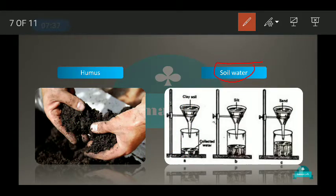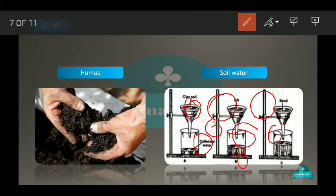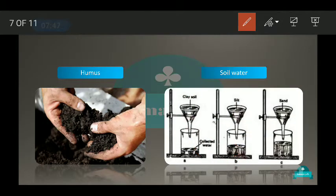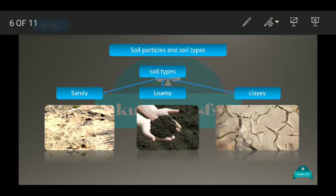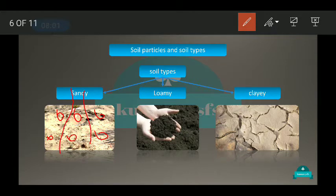Next is soil water. Depending upon the texture of soil, it has a different capacity for holding water. Sandy soil has bigger particles, so its water holding capacity is very low — water drains down due to gravitational force. Clay soil has fine particles with no space, so water is locked in and water holding capacity is high.